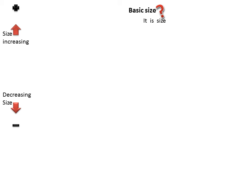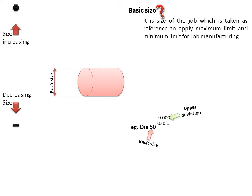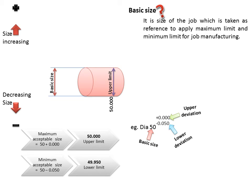Basic size is the size of the job which is taken as reference to apply the maximum and minimum limits for job manufacturing. For example, diameter 50 mm is taken as the basic size. The upper deviation is 0.00, so the maximum acceptable size is 50 + 0.00 — that is the upper limit. The lower deviation is −0.050, so the minimum acceptable size is 50 − 0.050 — that is the lower limit.